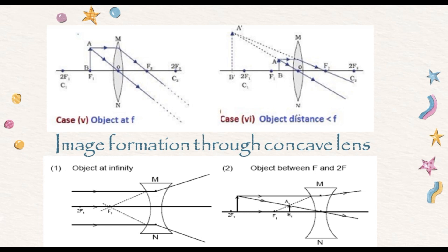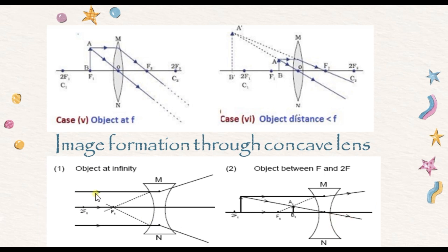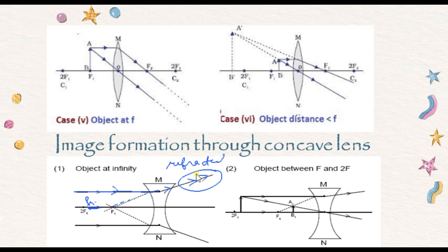Now we are dealing with image formation through a concave lens. When a ray of light parallel to the principal axis falls on the lens, the refracted beam appears to come from the focus. In the second case, when your object is located anywhere in front of the concave lens, the image will be formed between f and O, and the image formed will be virtual and smaller in size.